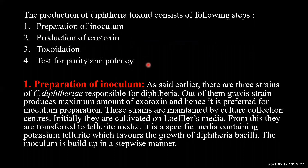To prepare the inoculum, the gravis strain of Corynebacterium diphtheriae is used because it produces the maximum exotoxin. The strain is maintained by culture collection centers. Initially they are collected on Löffler's serum slope, from which they are transferred to blood tellurite medium — a specific medium containing potassium tellurite which favors the growth of diphtheria bacilli.